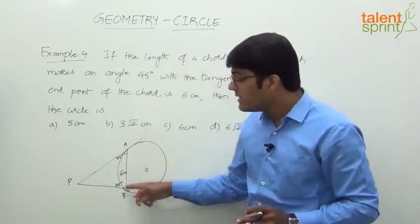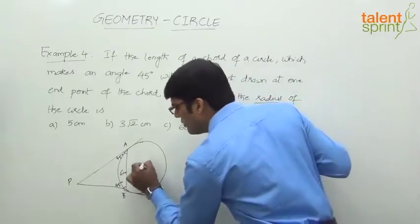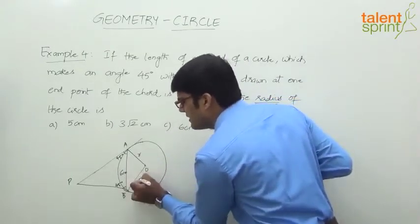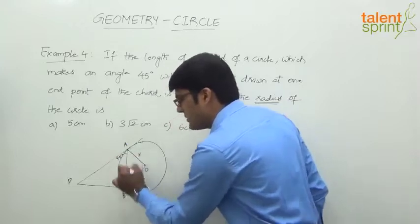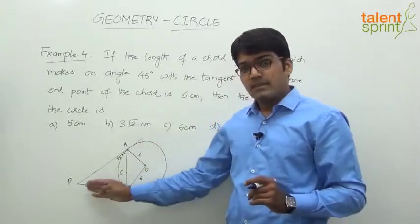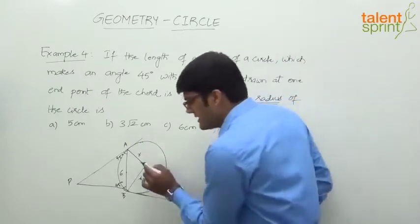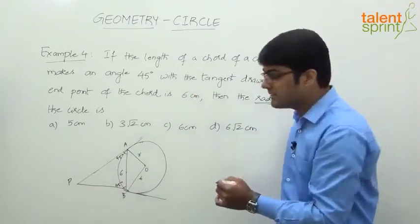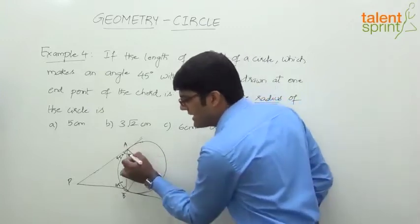We have to find the radius. OA and OB are both radii — both equal to r. Now, using the key property: the radius through the point of contact makes an angle of 90 degrees with the tangent. At point A, the total angle between OA and the tangent is 90 degrees. Since the chord already covers 45 degrees, the remaining angle between OA and the chord AB is also 45 degrees.